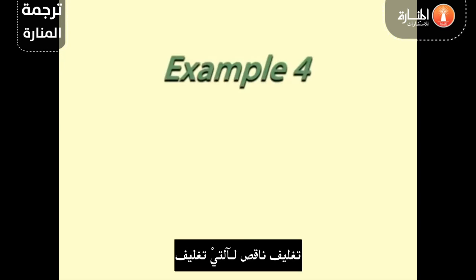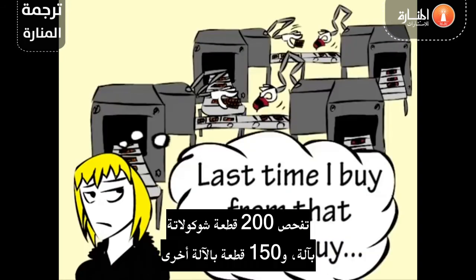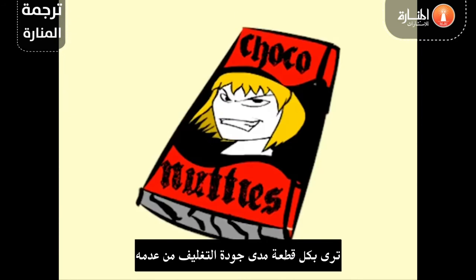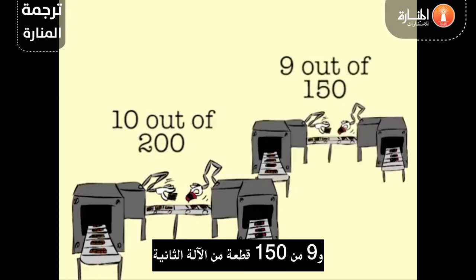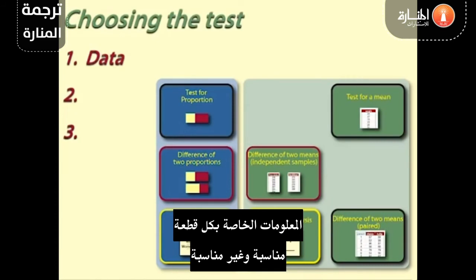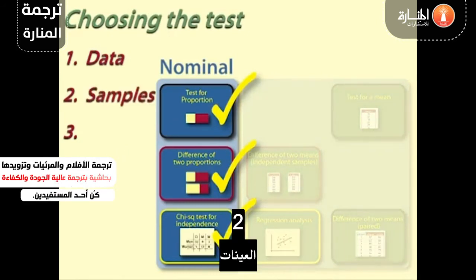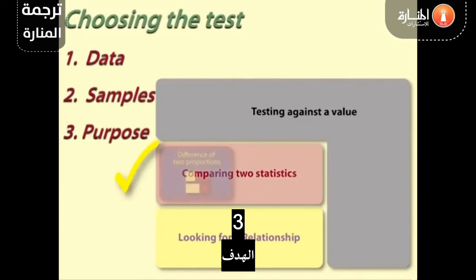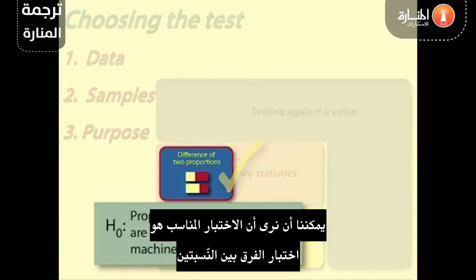Example 4: Defective wrapping from two wrapping machines. Helen thinks there is a difference in performance between the two choc-a-nutty wrapping machines in her factory. She checks 200 bars from one machine and 150 bars from the other. For each bar, she is seeing if the wrapping is satisfactory or not. She finds that 10 out of 200 bars from the first machine and 9 out of 150 bars from the second machine are badly wrapped. 1. Data: The information for each bar is OK or not OK — this is nominal data summarised as frequencies. 2. Samples: There are two independent samples, one from each machine. 3. Purpose: Helen is comparing the proportions from the two samples. The test is difference of two proportions.